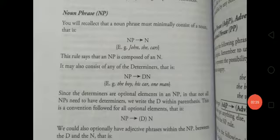Starting from noun phrases, that is NP. You will recollect that a noun phrase must minimally consist of a noun, that is NP arrow N. For example, John, cars. This rule says that an NP is composed of an N, that is a noun.